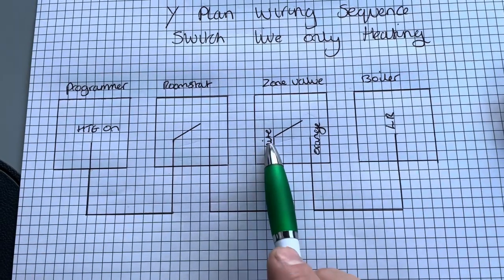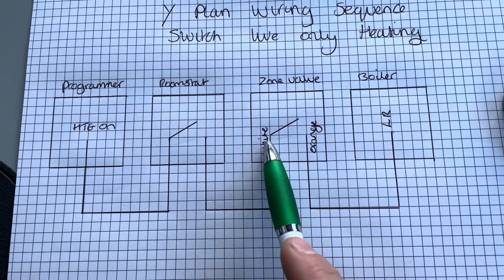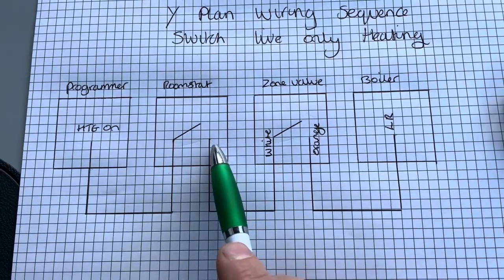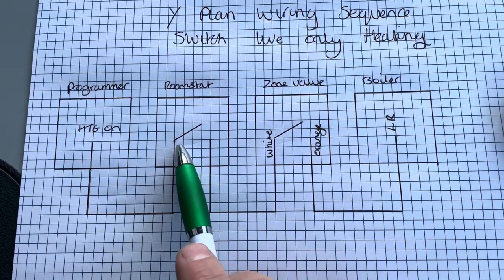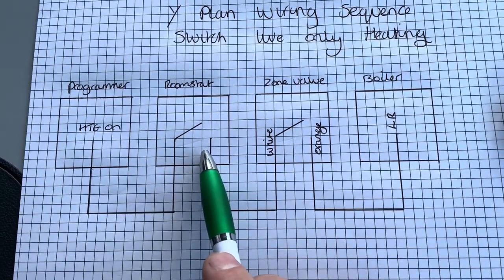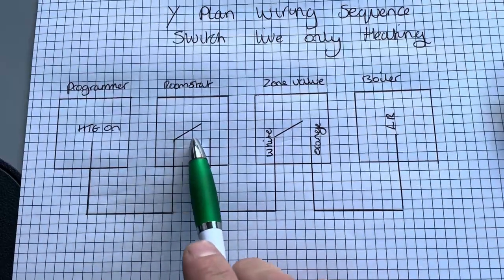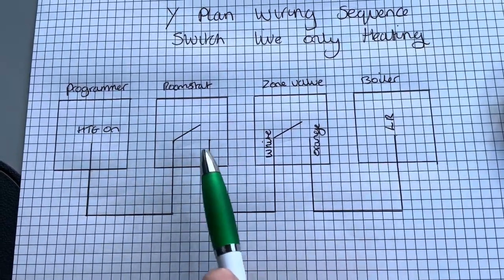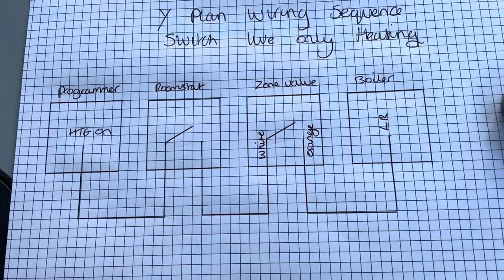If you tested on your white and you weren't getting 240, I would then go to the backside of the room stat. Are you getting power at your room stat? If you are, then your programmer is okay and it's your room stat fault. And then you can literally apply that to all the components.